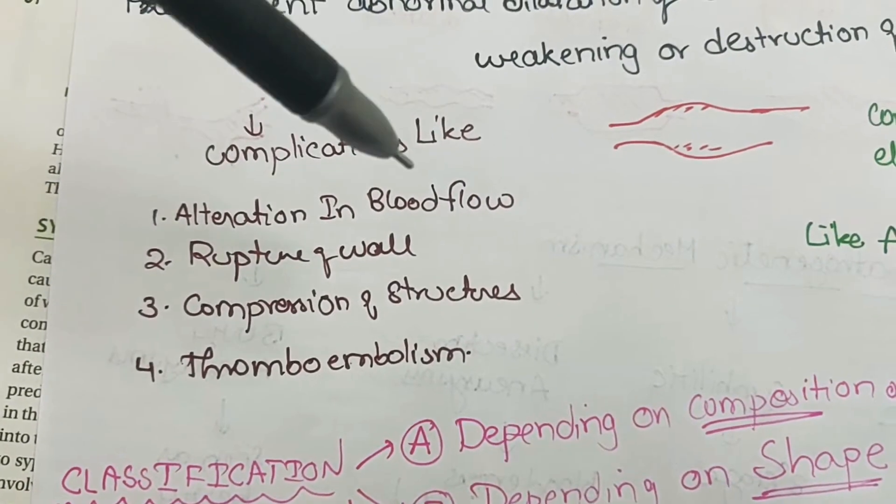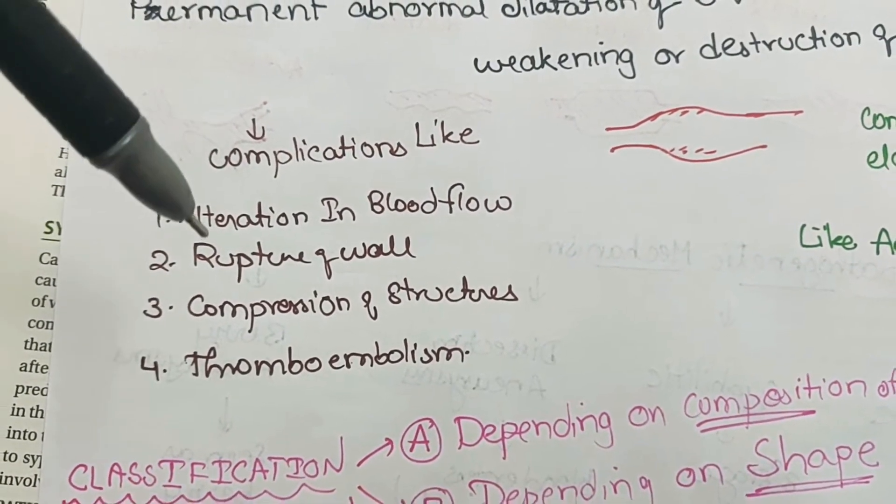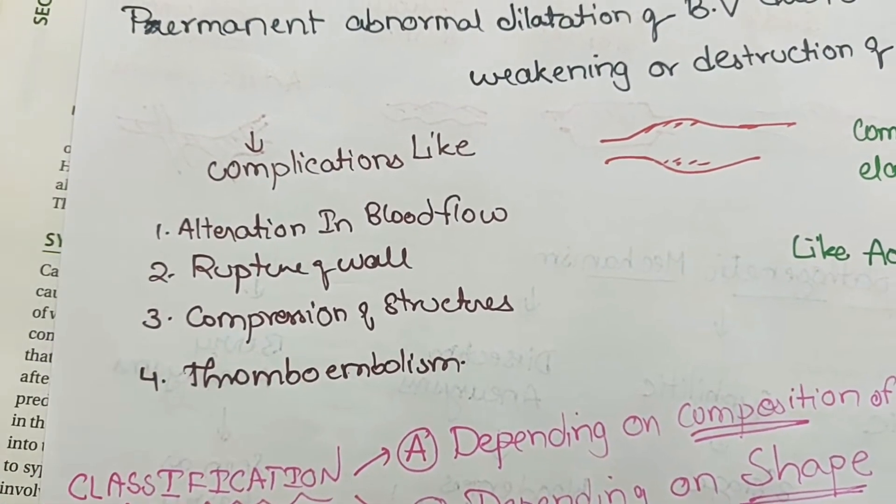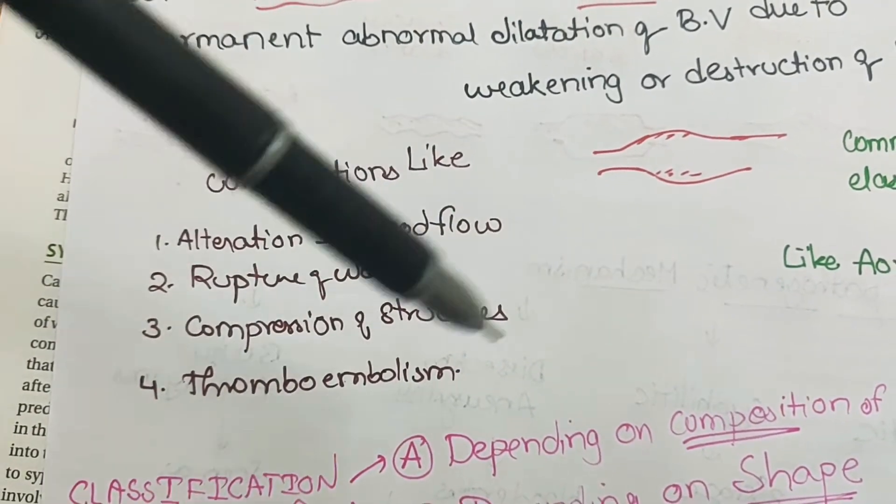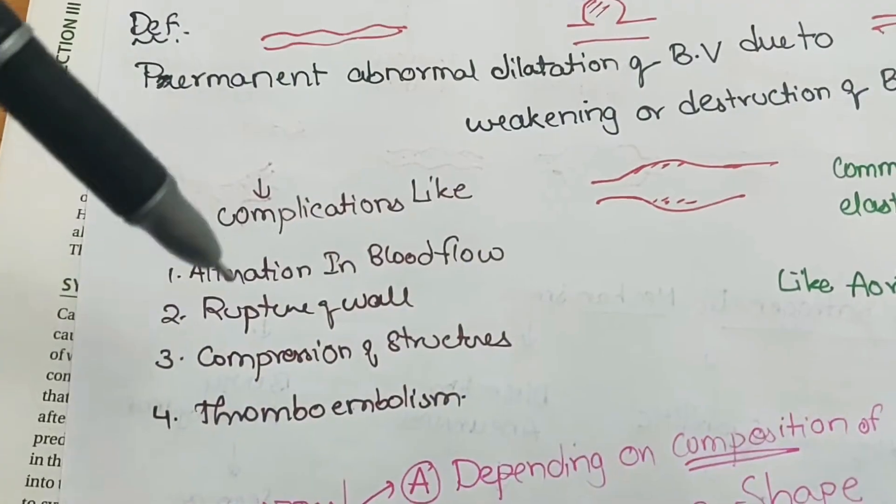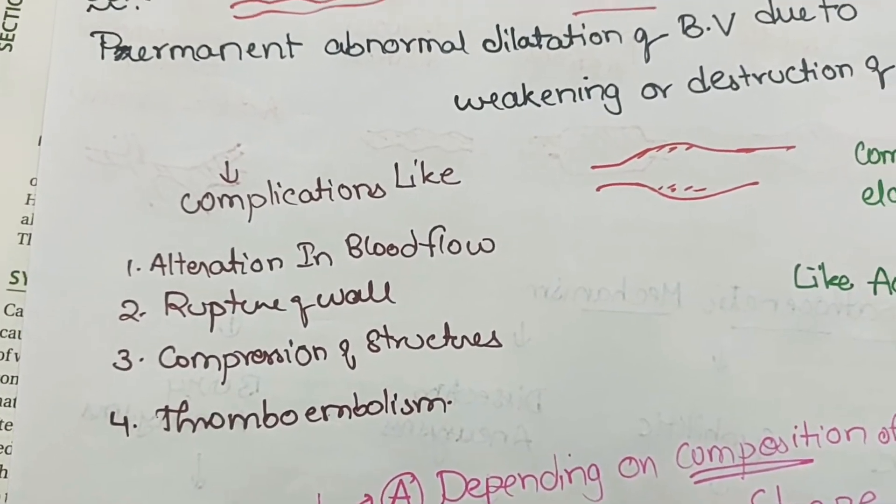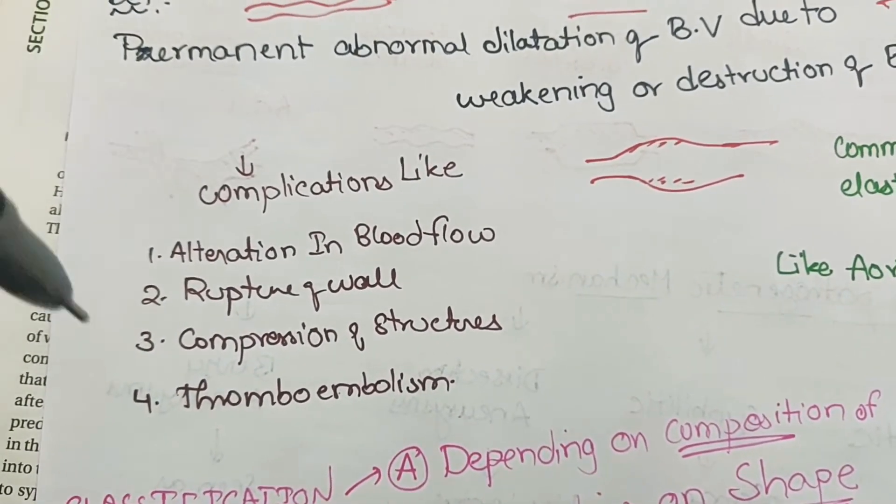The main complications are it can alter the blood flow, rupture of the wall of the blood vessel can occur, there may be compression of the structures surrounding the aneurysms, and it may lead to thromboembolism due to alteration of the blood flow.